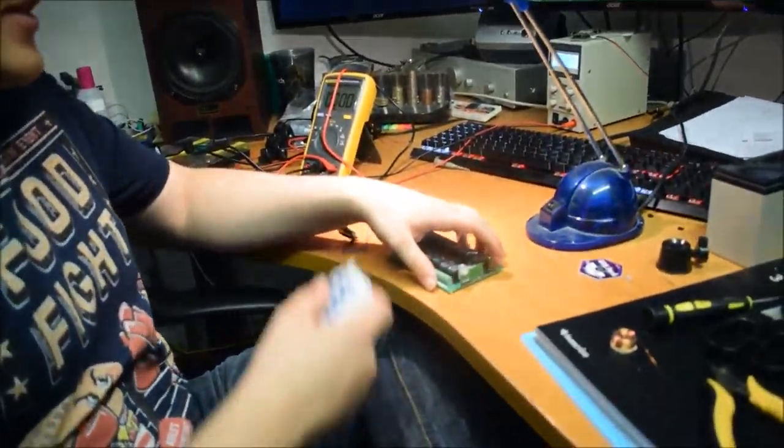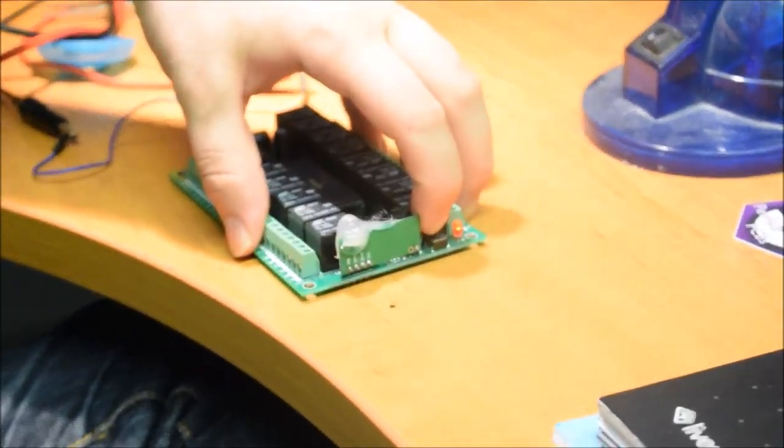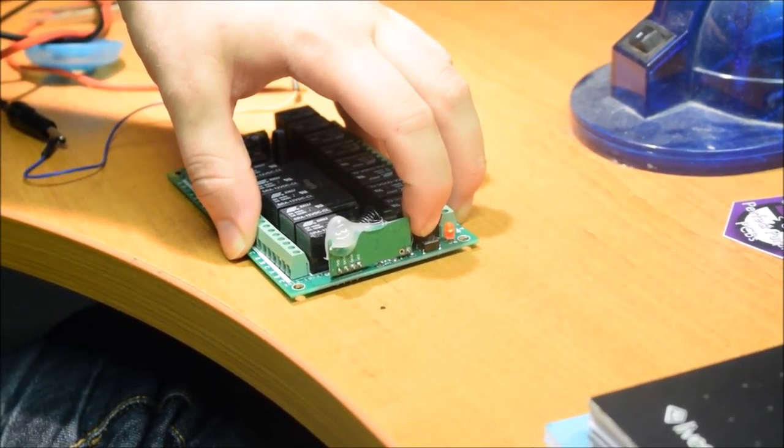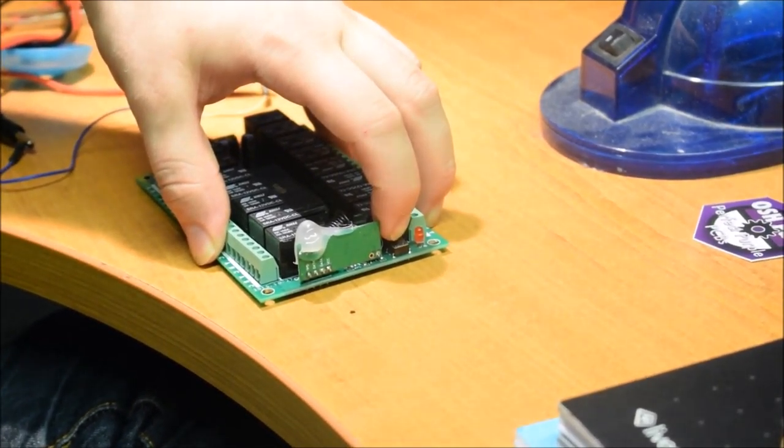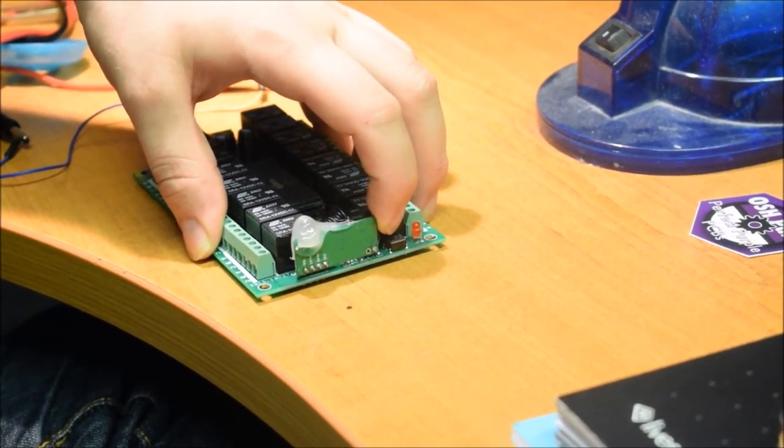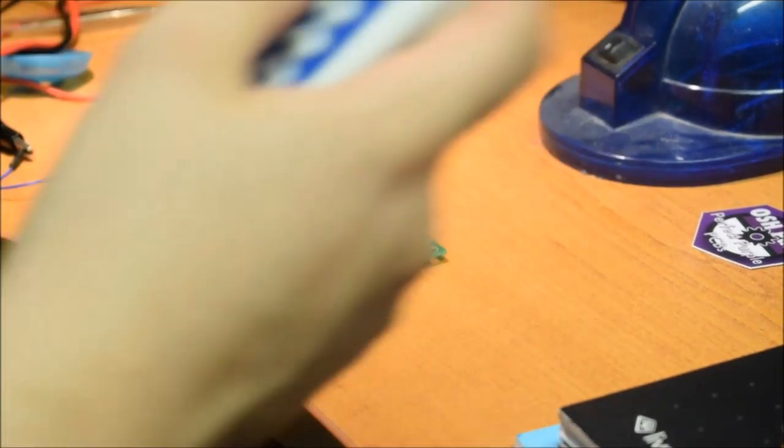We're going to demonstrate how to pair this specific model. You hold the button down for some number of seconds. The LED will go on when you click it, and then it will go off after about five seconds. That means it's cleared the memory. Then you push it one more time and push the button on the remote and it starts blinking and it's done.